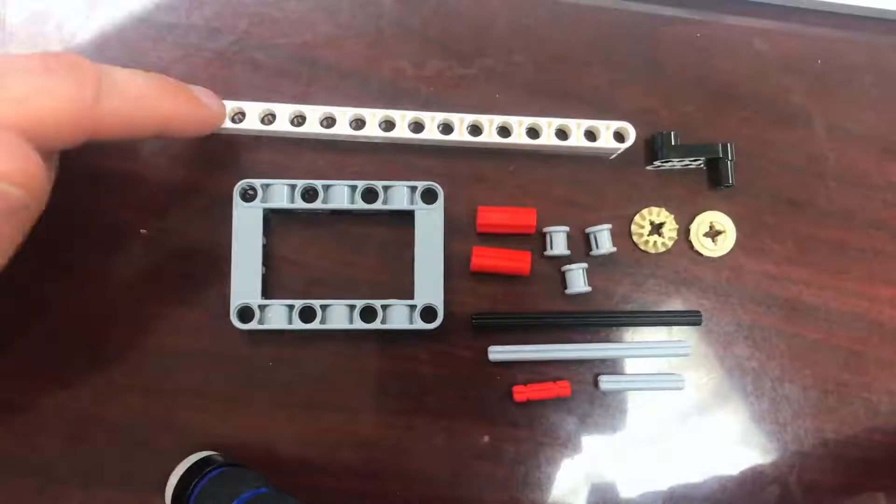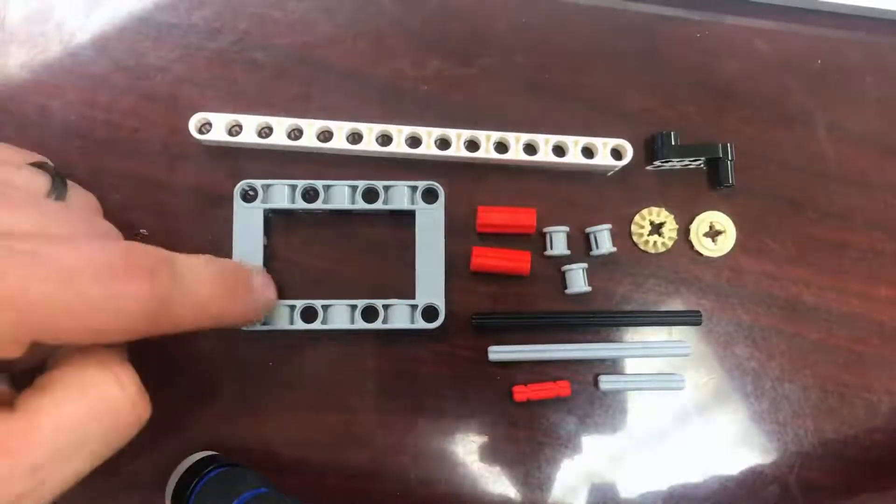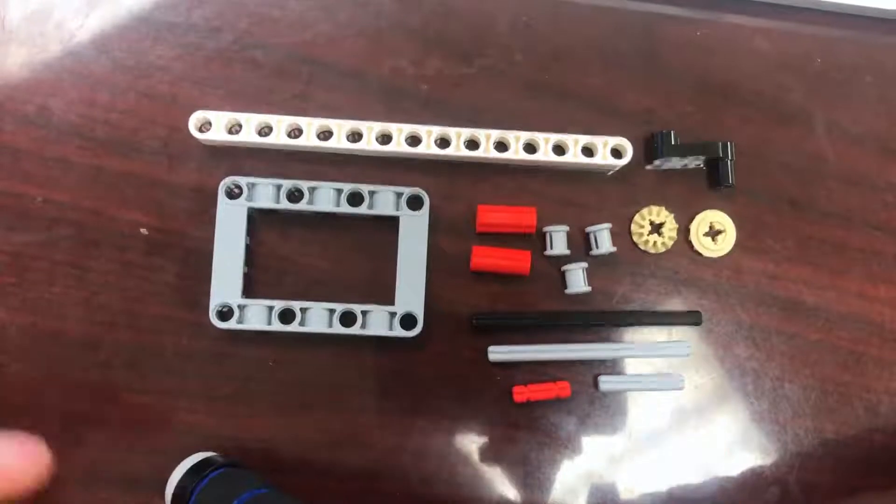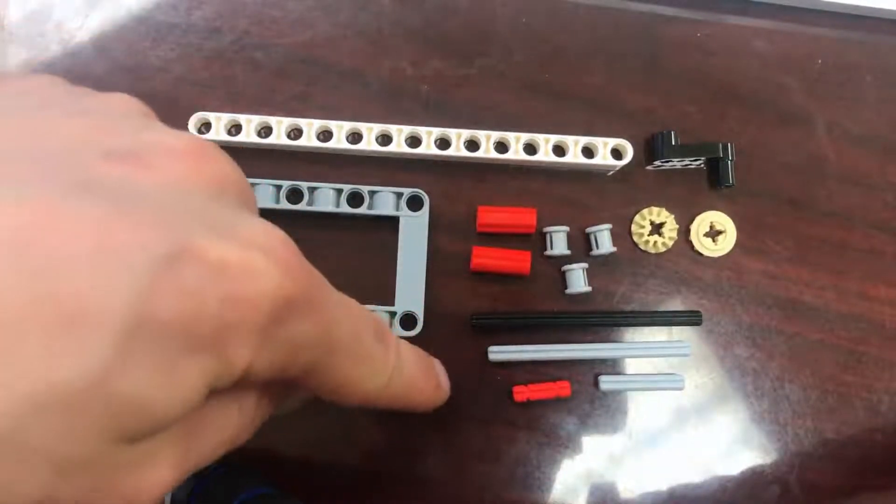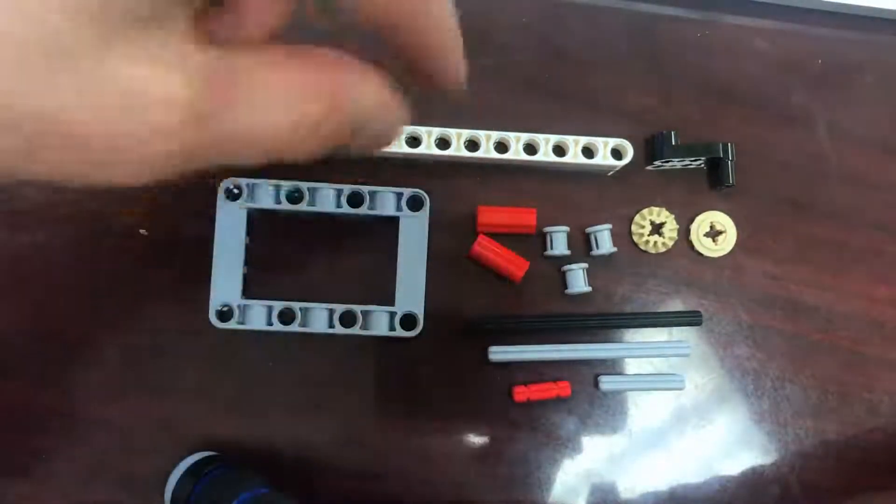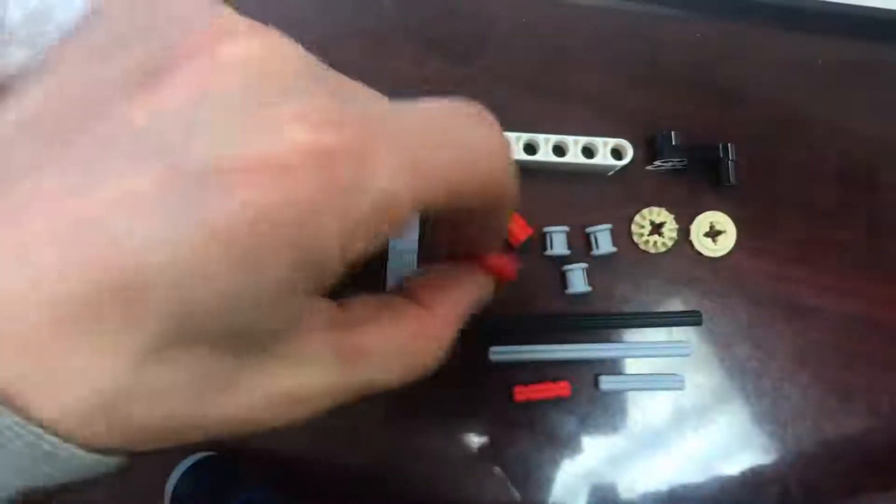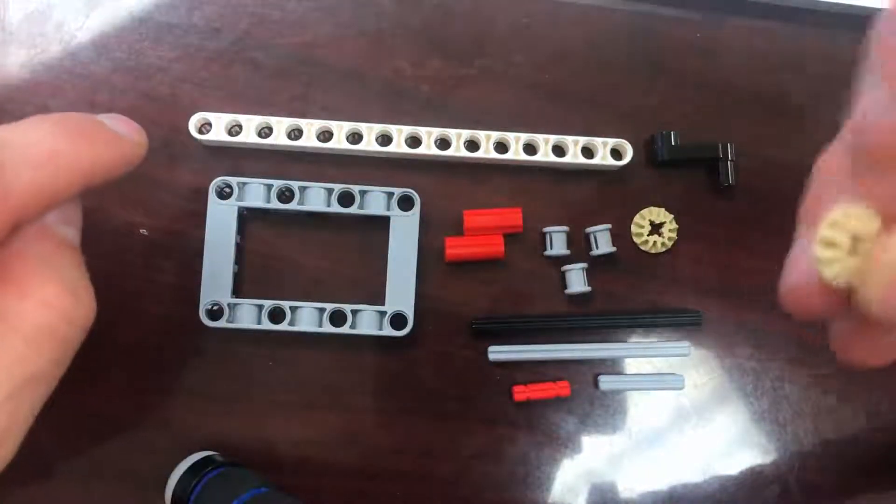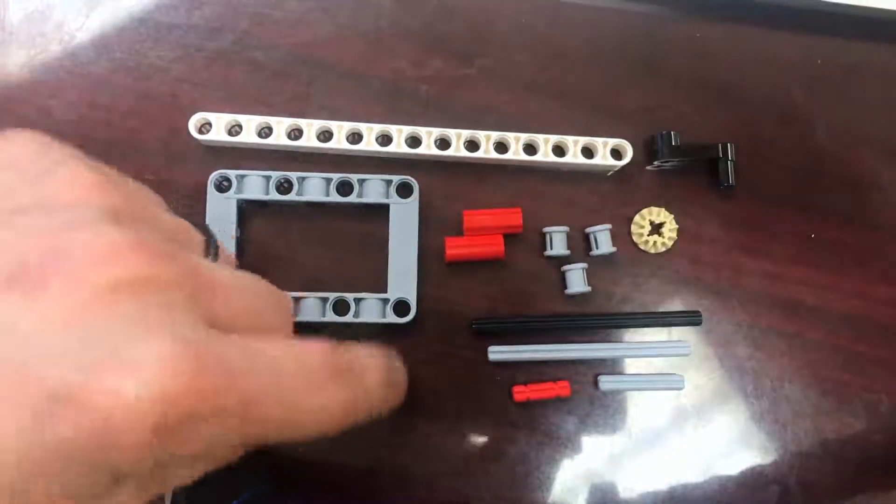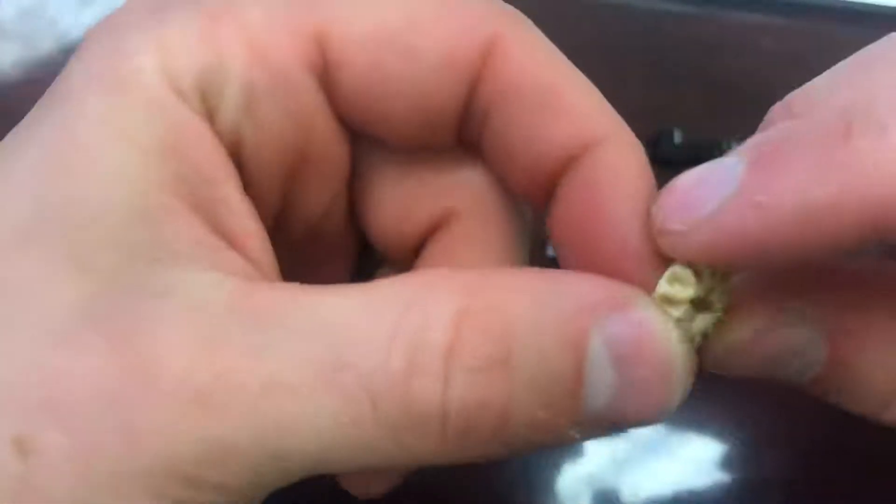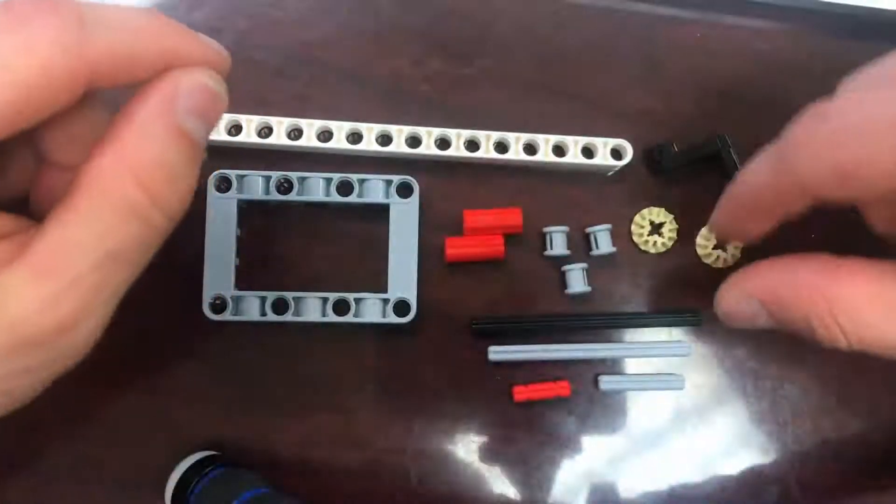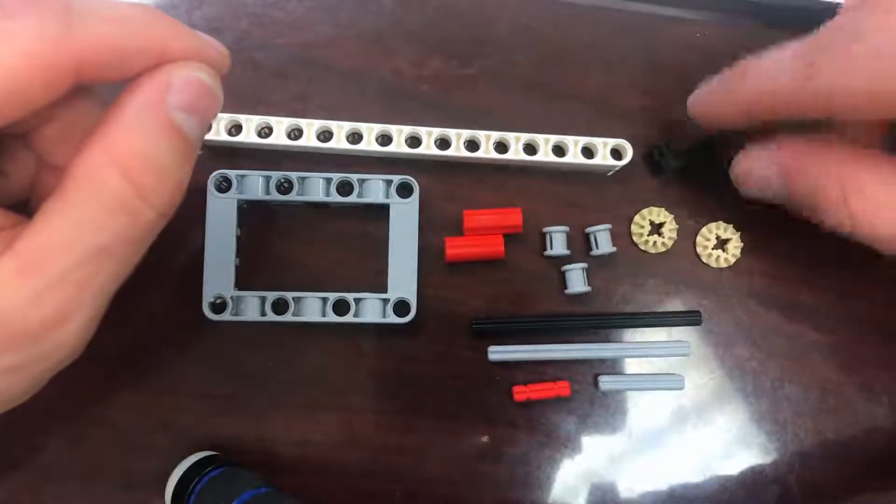These are the parts we're going to need. We're going to need a number 15 axle, a picture frame, a number 2 axle, a number 3 axle, a number 7 axle, a number 8 axle, two of these axle couplers, and two of these gray or tan gears. Sometimes they're gray, sometimes they're tan. They look like this - they got kind of a side thing on them. And three gray bushings.